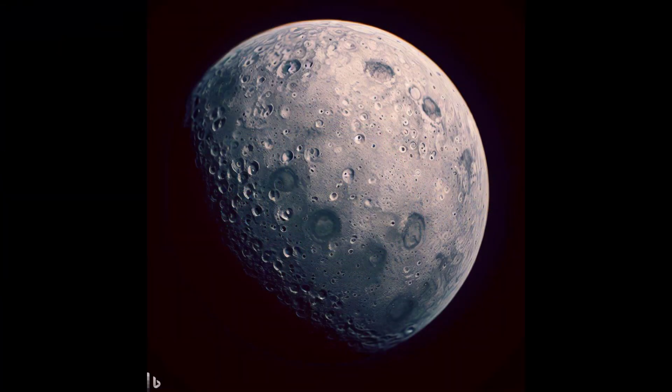Mercury is the smallest and closest planet to the Sun. It has a rocky surface covered with craters and a thin atmosphere. It has no moons and experiences extreme temperatures due to its proximity to the Sun.